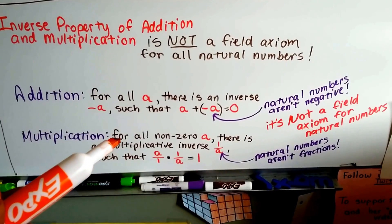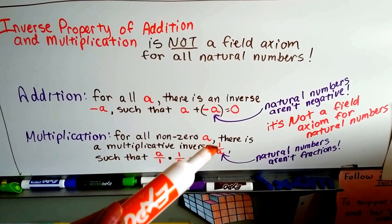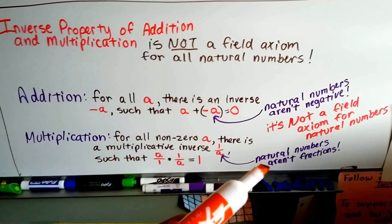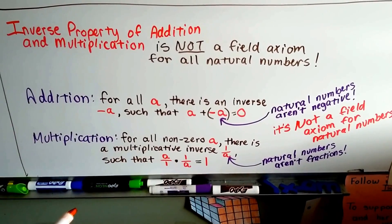How about for multiplication? All non-zero numbers a, there's a multiplicative inverse one over a. Natural numbers aren't fractions, so this is not a field axiom for natural numbers.